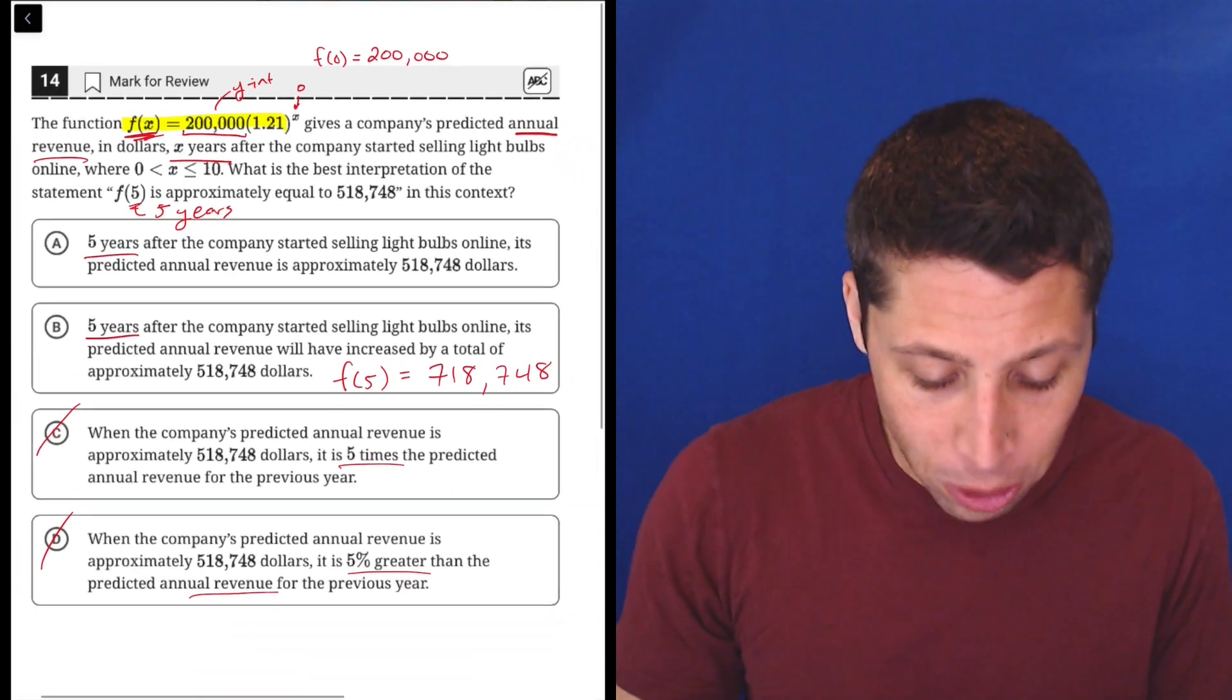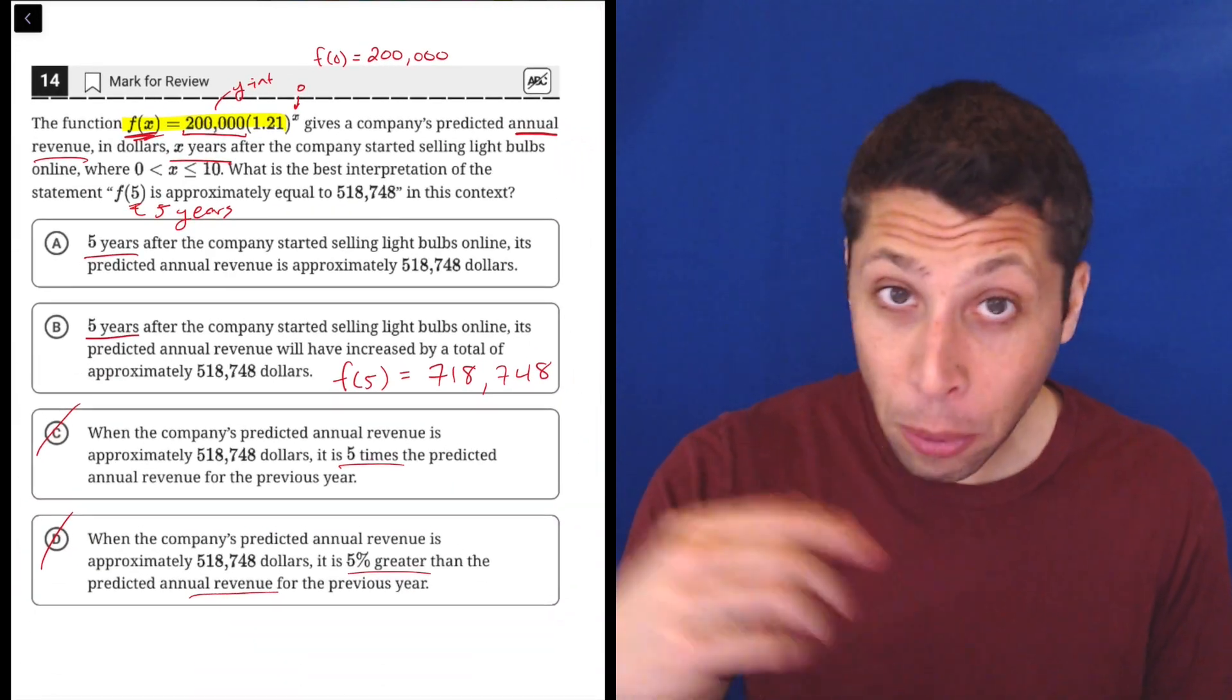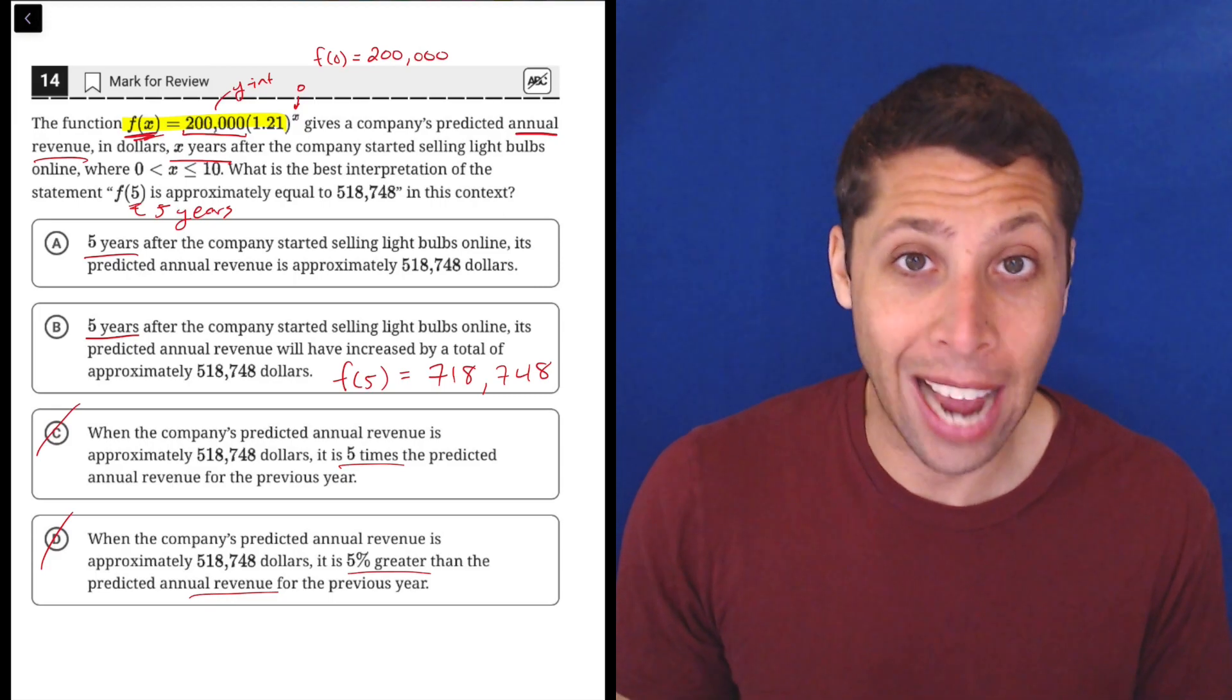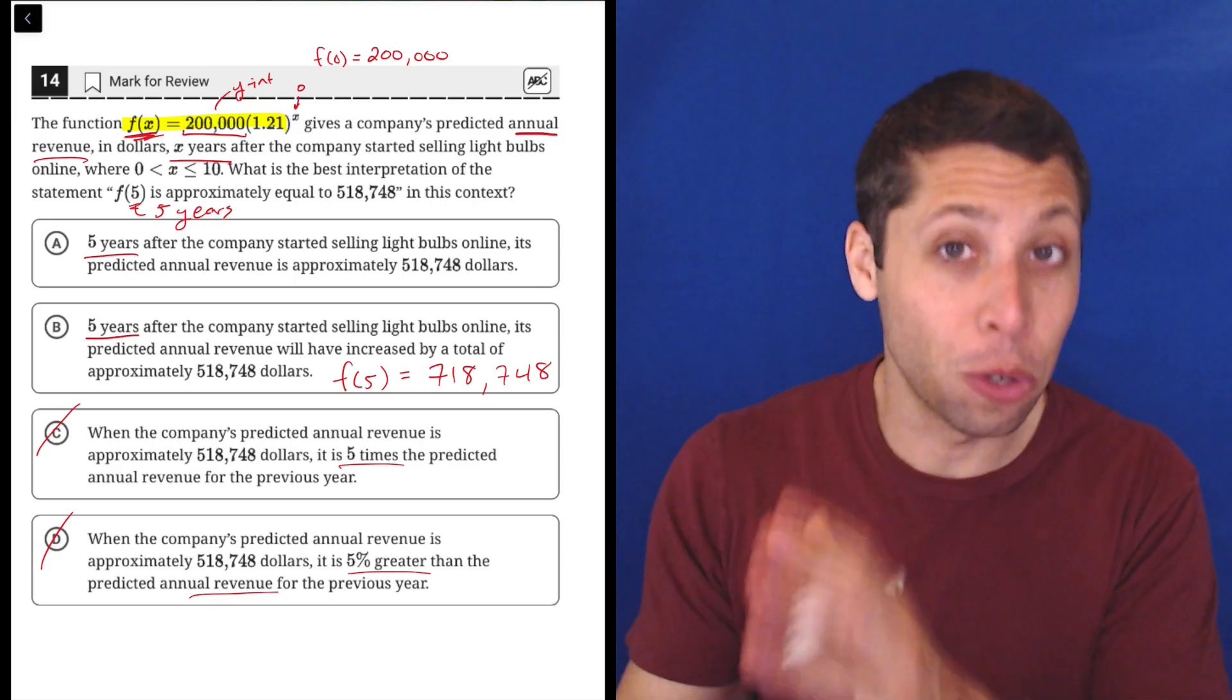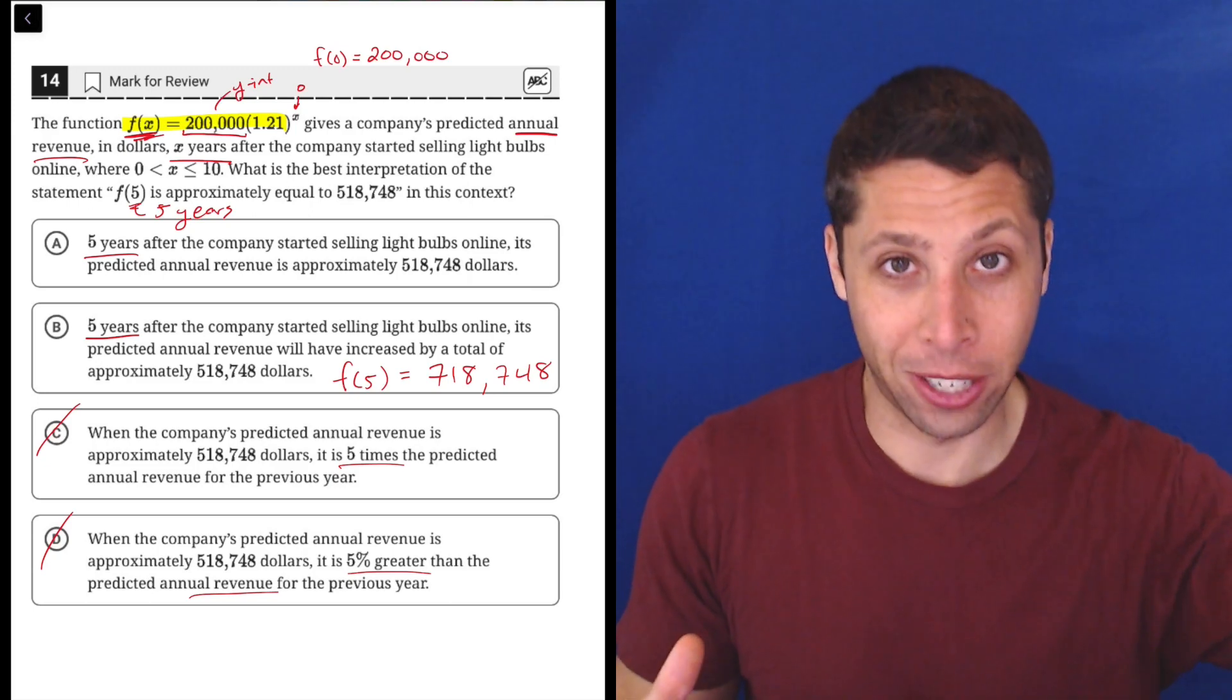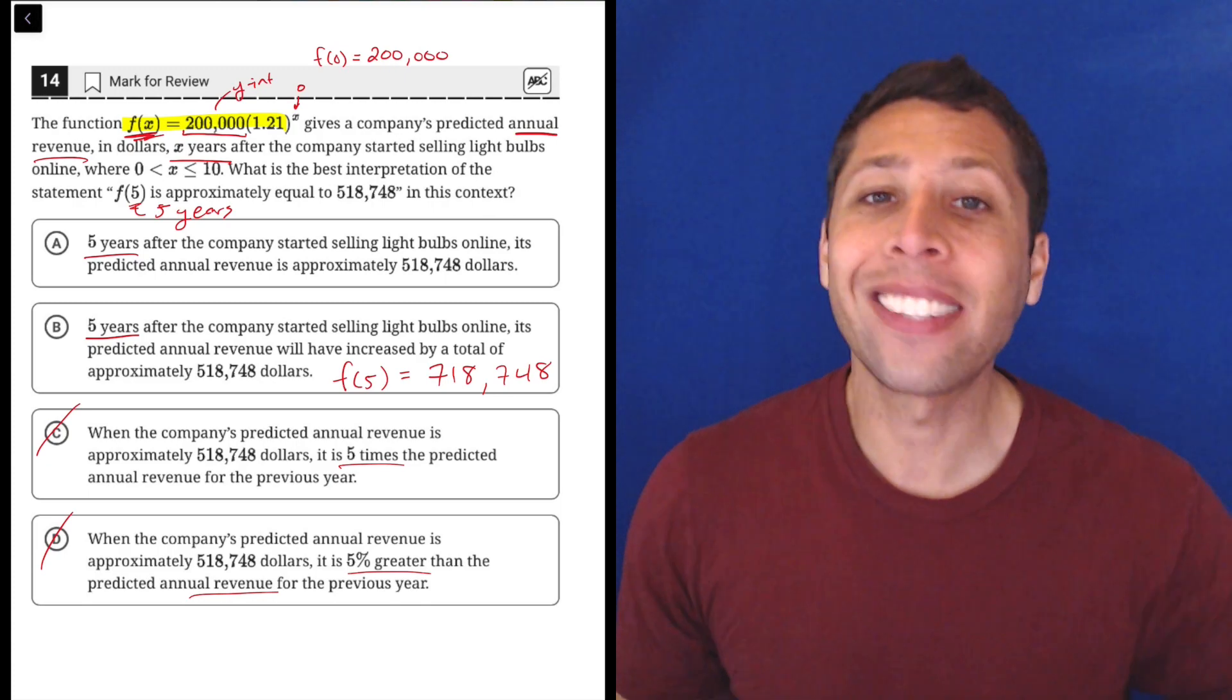So for choice B to be true, then when we put five in for that x, we would get 718,748 out because we are taking our 200,000 we start with and then increasing it by the 518,000. But that's not what's happening.